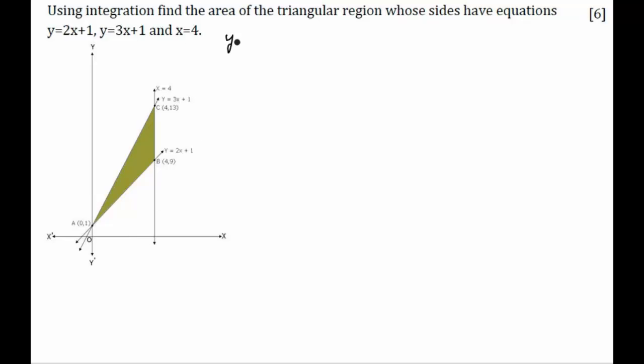Let us call y1, which is lying on the upper side, as 3x + 1, and y2, which is below it, as 2x + 1.